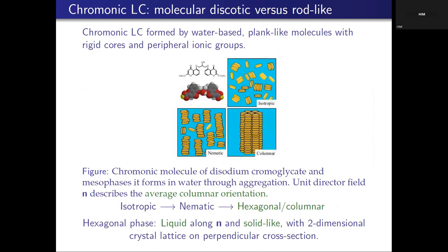Chromonic liquid crystals are formed by water-based, plank-like molecules with rigid cores and ionic groups in the periphery. A typical molecule is disodium cromoglycate, which is an anti-asthmatic drug. For all purposes, you can imagine them as coins or discs. The flat faces are hydrophobic — they want to find another flat face — whereas the sides are hydrophilic and want to be near the water. This drives the whole self-assembly.